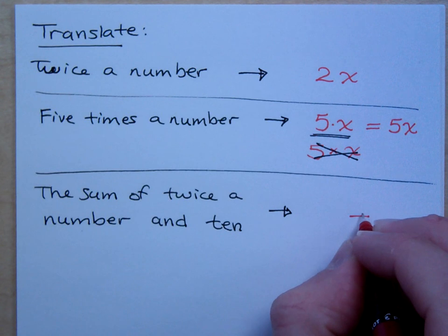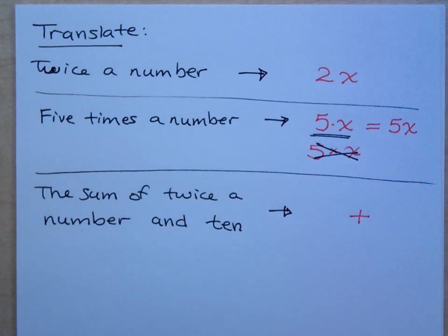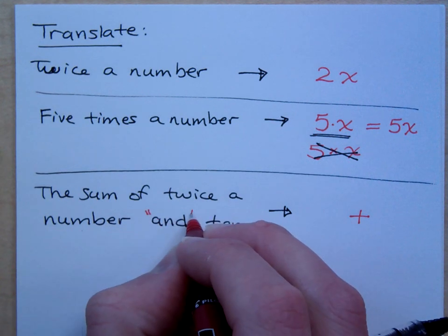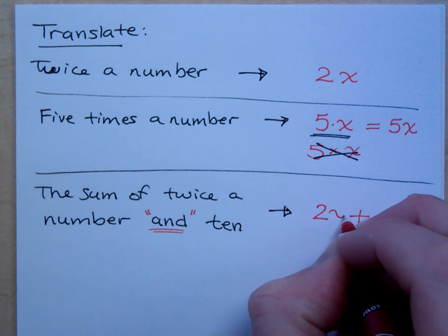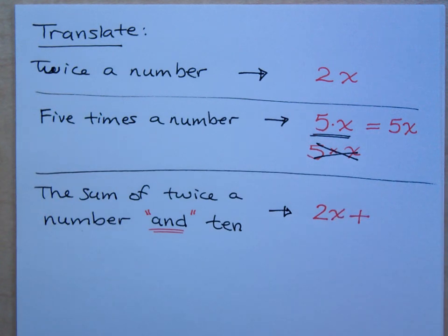So I've got addition over here, and then I look for the word and. Remember how we said the word and will tell us what comes before and what comes after that main operator. So before the plus, before the word and, what do I see? Twice a number. So I write two x. What do I see after the word and? Ten.